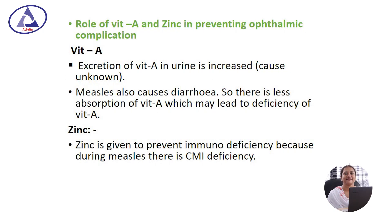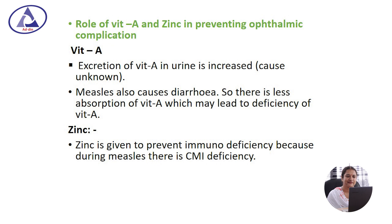Role of vitamin A and zinc in preventing ophthalmic complications: excretion of vitamin A in urine is increased in measles virus infection, and measles also causes diarrhea, leading to less absorption of vitamin A which may result in vitamin A deficiency. Zinc is given to prevent immune deficiency, because during measles there is cell-mediated immune deficiency.